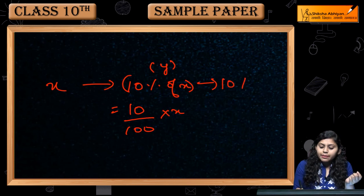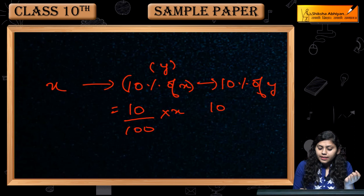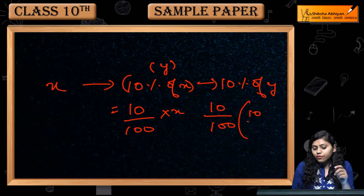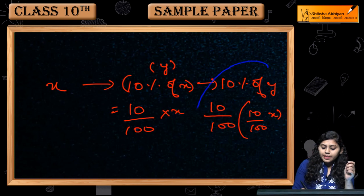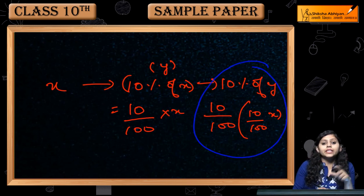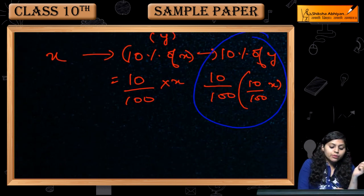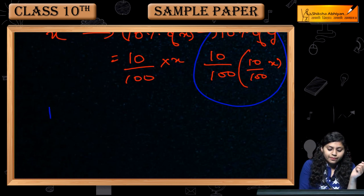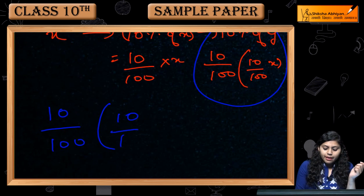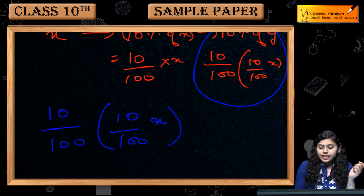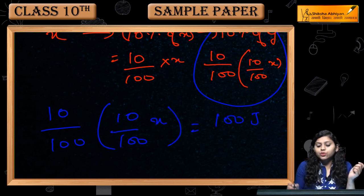Lion ke paas kitni hai? 10% of Y, which means 10 by 100 into 10% of X. Ab hum isse solve karenge. Humein di hui hai lion ke 100 joules of energy. So 10 by 100 into 10 by 100 of X is equals to 100 joules.